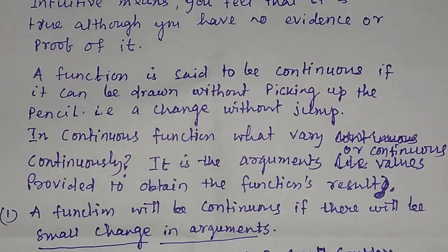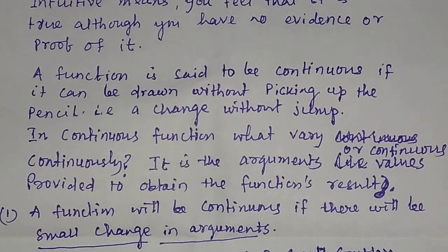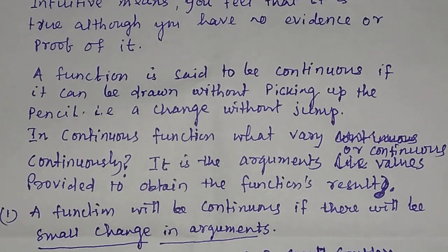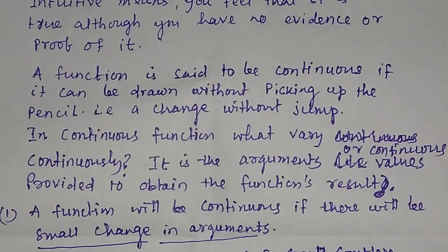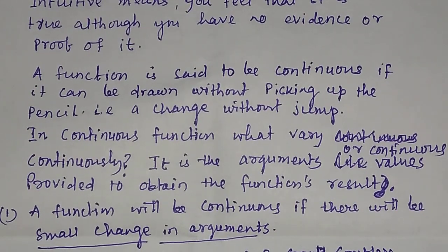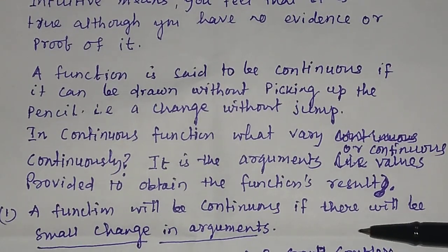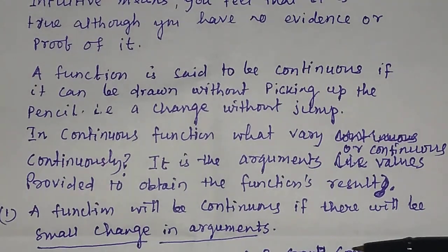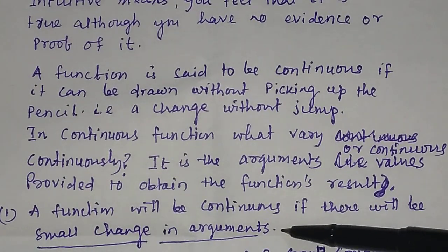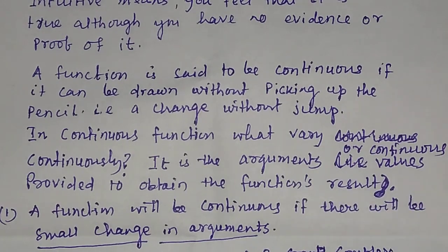That is, a change without jump. In a continuous function, what varies continuously? It is the arguments or continuous values that vary continuously. The arguments or continuous values are provided to obtain the function's result. A function will be continuous if there is a small change in arguments.